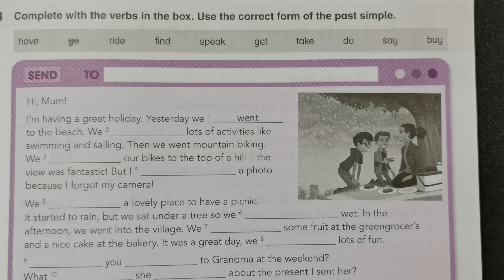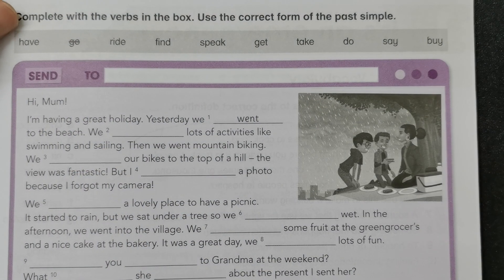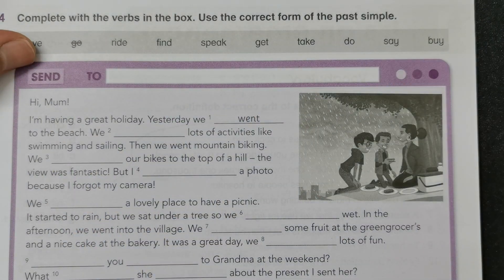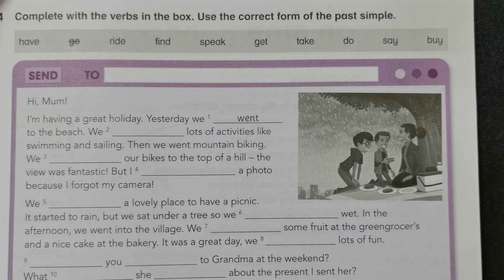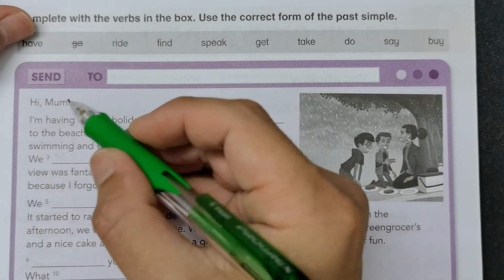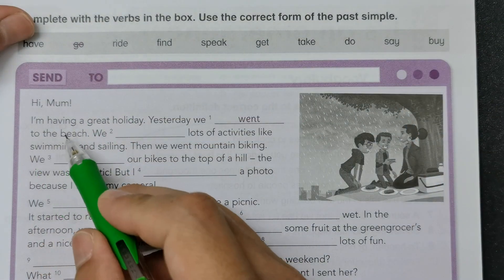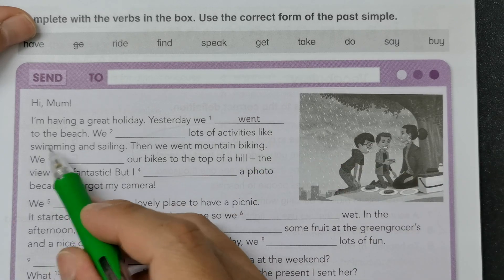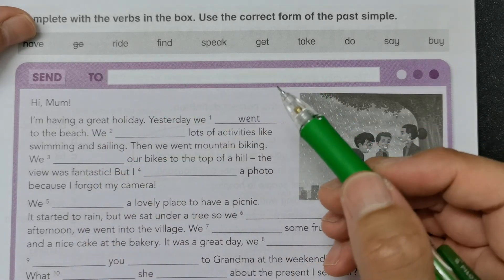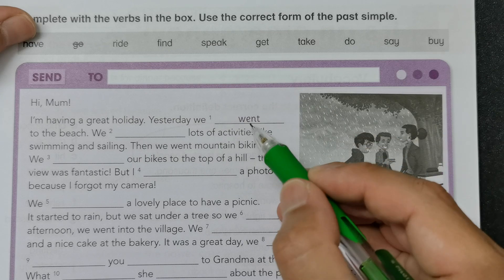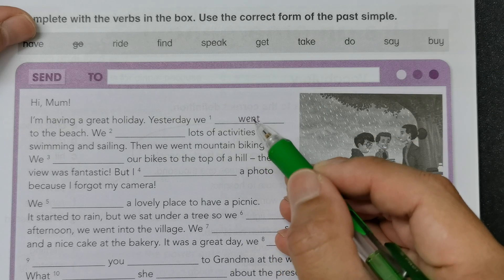First off you will see the send button. So obviously this is an email sent by Jack to his mother. So we read this first paragraph: 'Hi Mom, I'm having a great holiday. Yesterday we went to the beach.' So 'go' is an irregular verb, so we will change its form to 'went'.